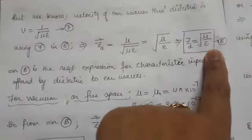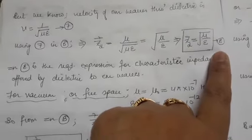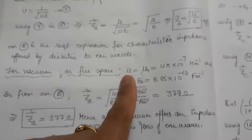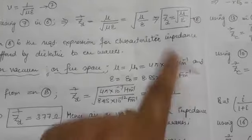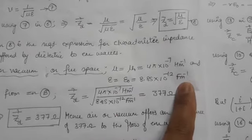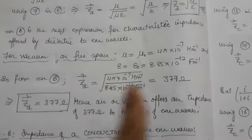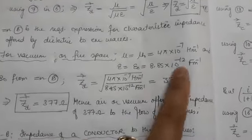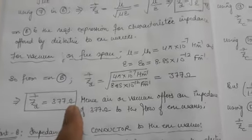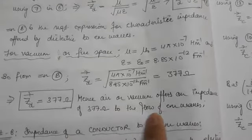What happens if this dielectric medium is taken as vacuum or free space? We replace μ with μ₀ = 4π × 10⁻⁷ H/m and ε with ε₀ = 8.85 × 10⁻¹² F/m in equation B. Putting these values in, ZD comes out to be 377 ohms. So air, free space, or vacuum offers an impedance of 377 ohms to the flow of electromagnetic waves.